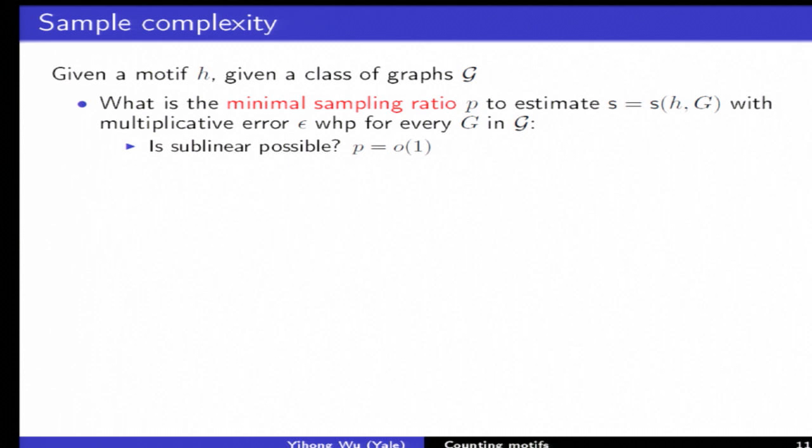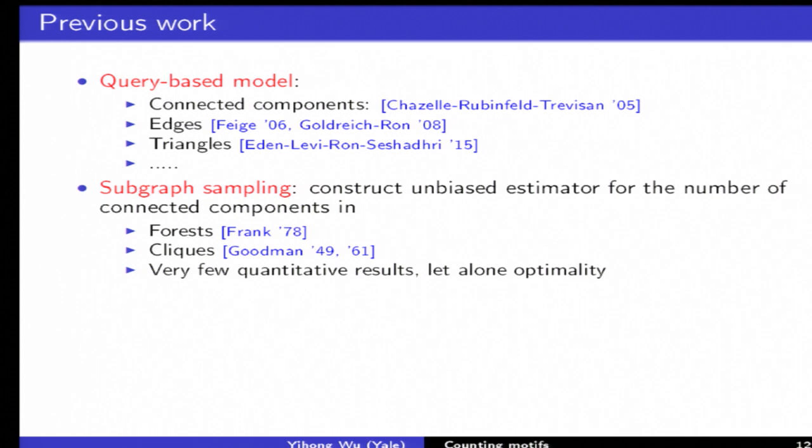In these statistical frameworks there's very few results previously. Essentially the only thing that people have computed are unbiased estimators and then for some other stuff for connected components, the more global structures.